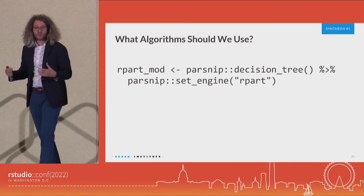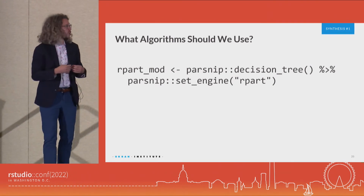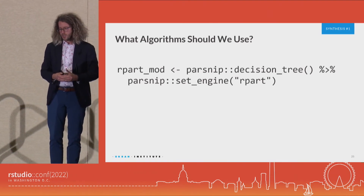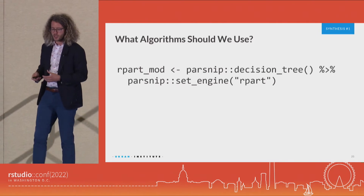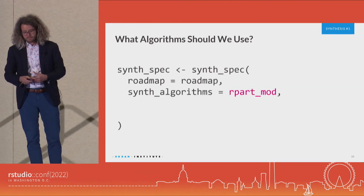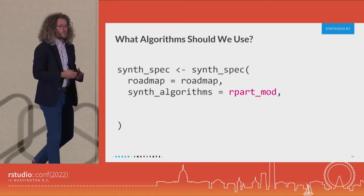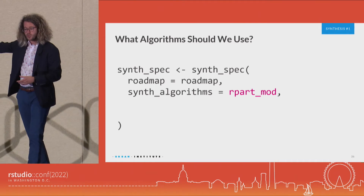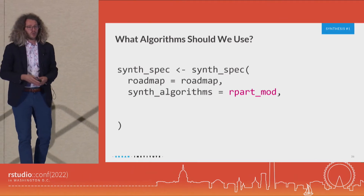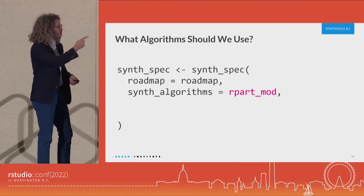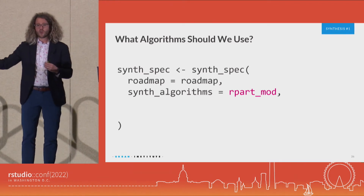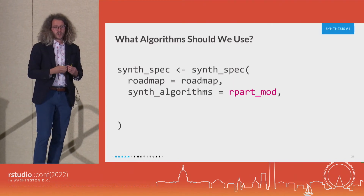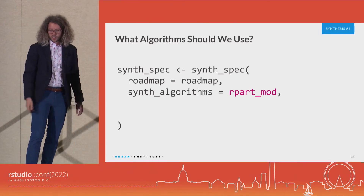What kind of algorithm should we use for our predictive models? In this case we're going to use a regression tree — and this is where parsnip really shines in tidysynthesis. We just specify a regression tree implemented with the rpart engine. Now we need to specify that for all of our different models, and this is where we're really saving on all that R code. We just specify that we want to use the rpart model for every single variable. There are three ways to specify this: use the same model for all variables, specify a default and then override it for specific variables, or specify a different model for every single variable.